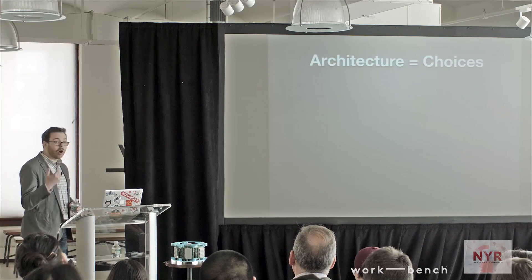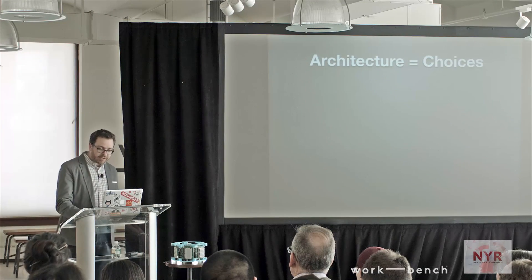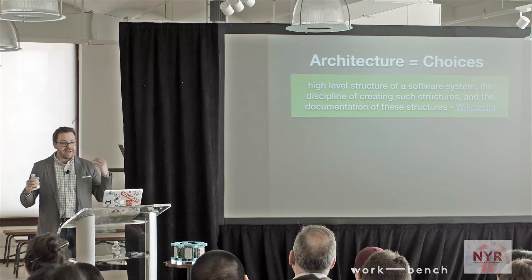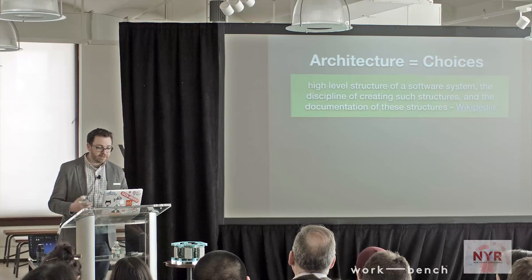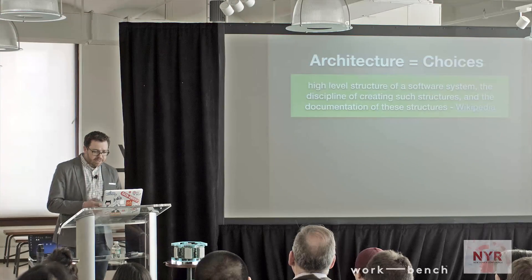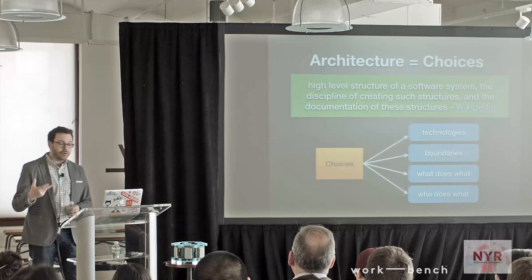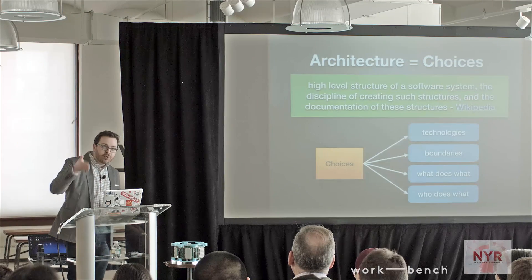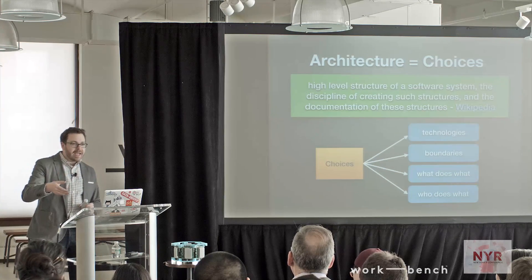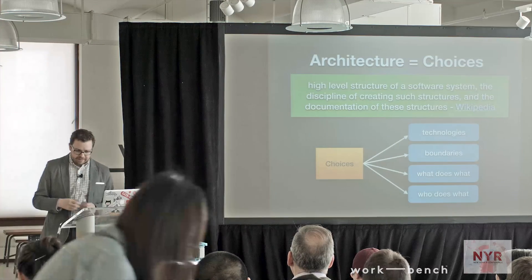I'm going to talk about architecture and I'm going to talk about choices. What is software architecture? I'm going to steal from Wikipedia: it's the high-level structure of a software system, particularly a complicated software system, as well as the processes around it. In terms of choices, what I mean is: what technologies are you going to use? What are the boundaries between those technologies? What do the different pieces do? And importantly, who's responsible for building each of the pieces?